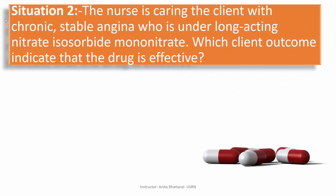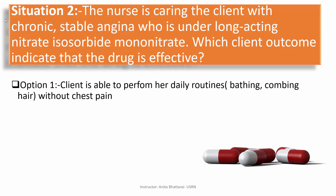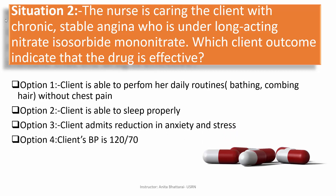Situation two: The nurse is caring for a client with chronic stable angina who is under long-acting nitrate isosorbide mononitrate. Which outcome indicates that the drug is effective? Option 1: client is able to perform daily routines such as bathing and combing hair without any chest pain. Option 2: client is able to sleep properly. Option 3: client admits reduction in anxiety and stress. Option 4: client's BP is 120/70.